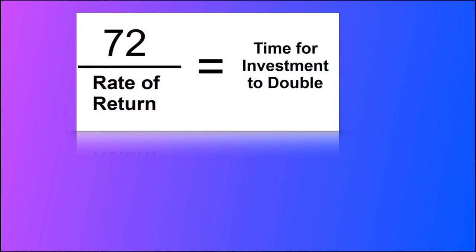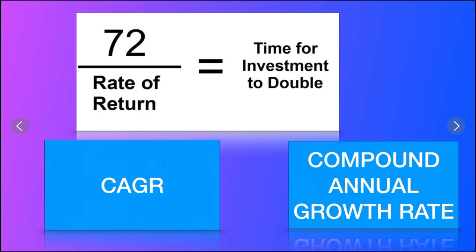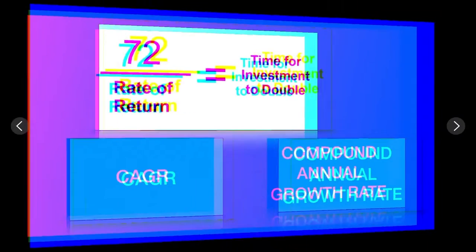Very simple formula: to find when we double our money, we divide 72 by our interest rate. This rate of return is based on compound interest. For example, if we have a 10% interest rate, how many years does it take to double?